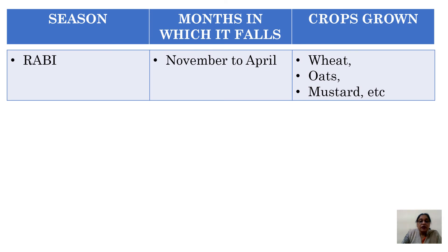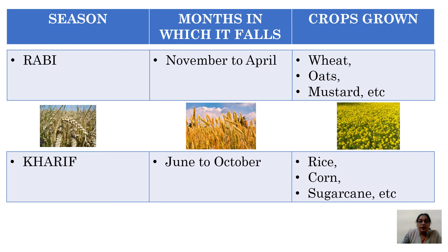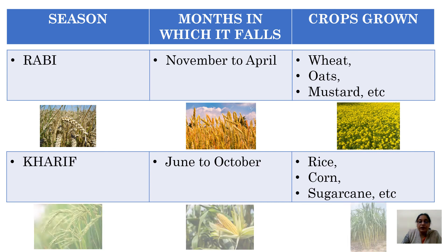The Rabi season falls in the months of November to April, and the crops grown are wheat, oats, and mustard. You can see pictures of wheat, oats, and mustard. Next is the Kharif crop — it falls in the months of June to October, and the crops grown are rice, corn, and sugarcane. You can see pictures of these crops as well.